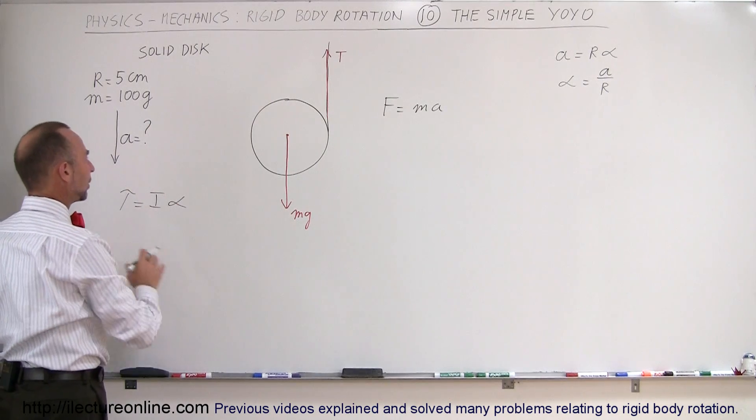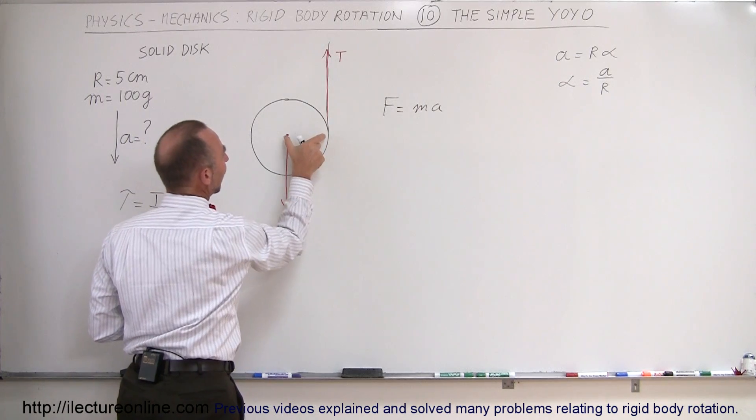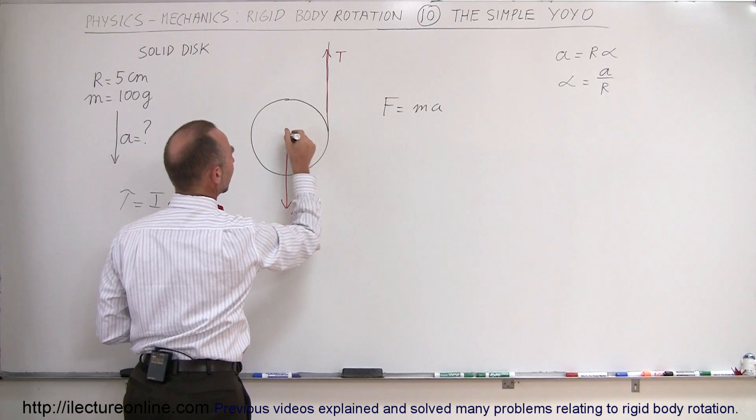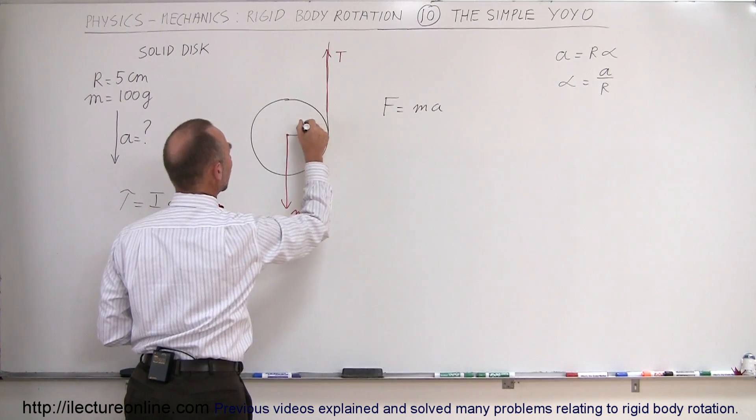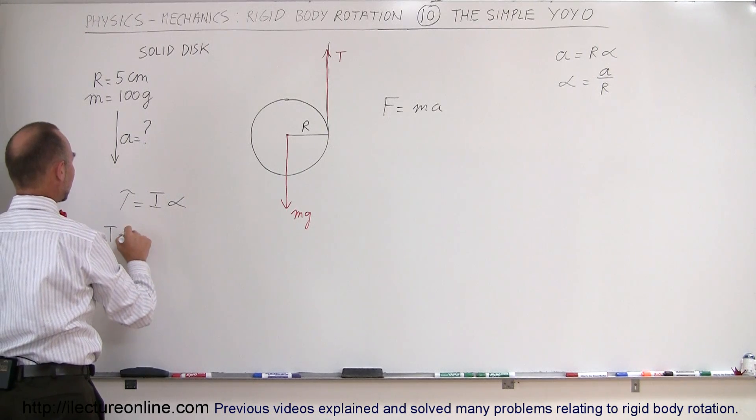Remember that the torque is equal to the force causing the torque, which in this case is the tension, times the perpendicular distance from the point of rotation to the line of action of force. And that of course would be the radius of the yoyo, R, so therefore the torque would be the tension times the radius.